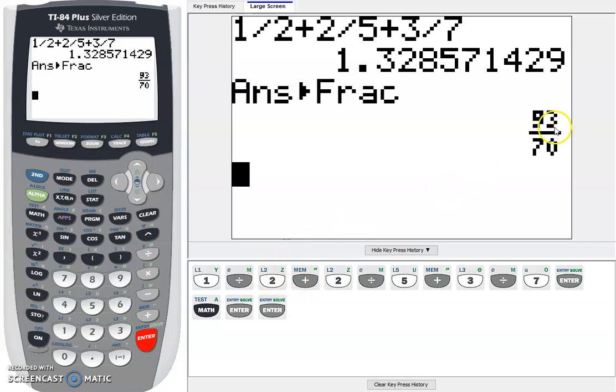Once it does it, it shoots out that improper fraction of 93 70ths, and that would be a cool way to do it.